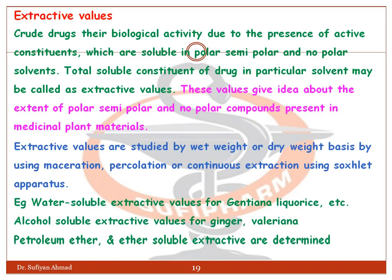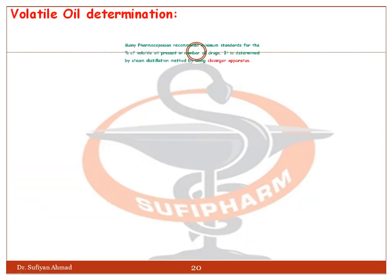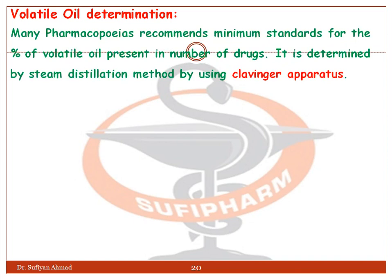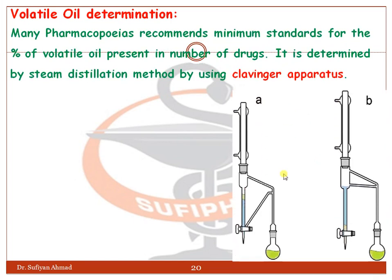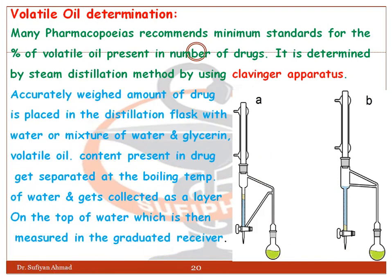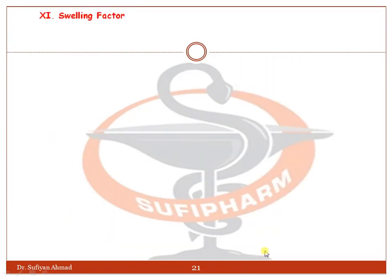Volatile oil determination can be done using the Clevenger apparatus. Many pharmacopoeias recommend a minimum standard for the percent of volatile oil present in a number of drugs. An accurately weighed amount of drug is placed in the distillation flask with water or a mixture of water and glycerin. The volatile content present in the drug gets separated at the boiling temperature of water and is collected as a layer on top of the water, which is then measured in the graduated receiver.